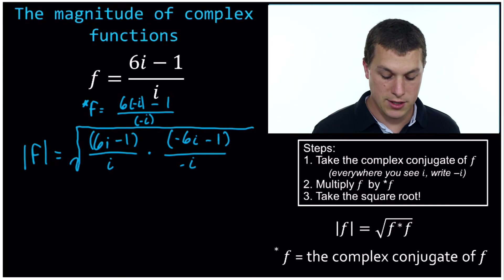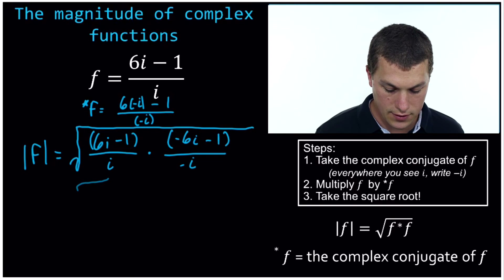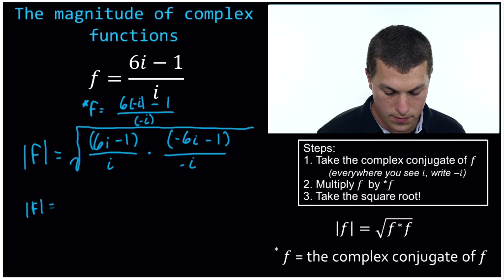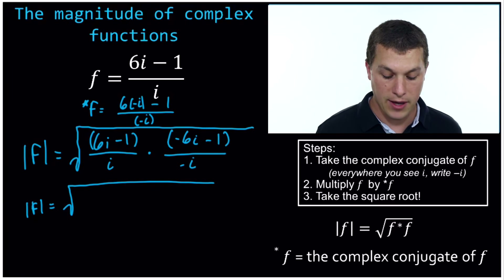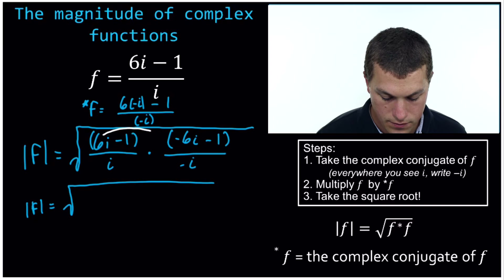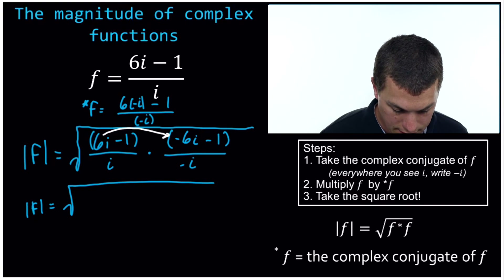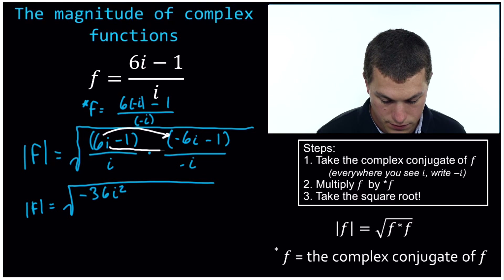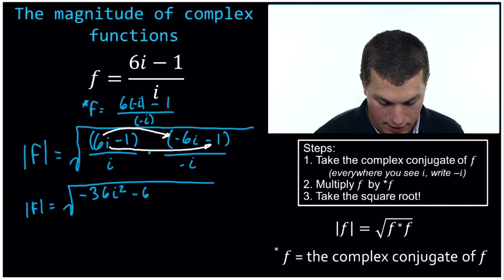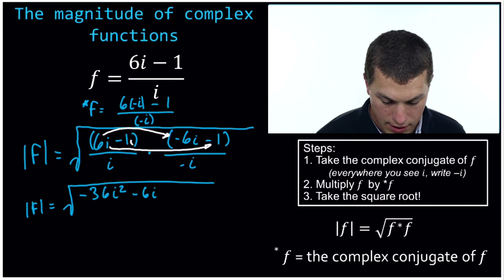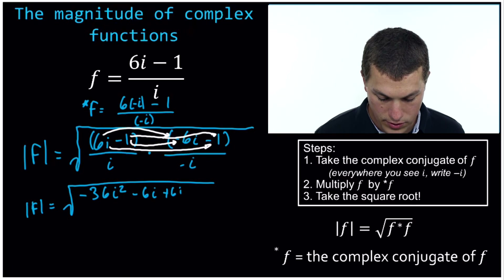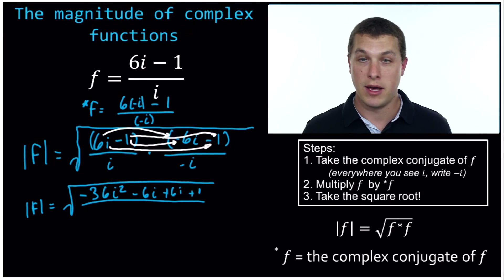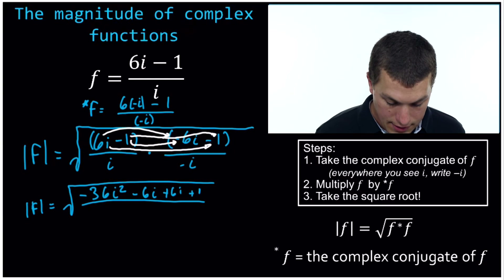The biggest trick here, once you get done taking the complex conjugate, is just remembering all your different multiplication rules for functions like this. We have to FOIL for the numerator. We multiply 6i by 6i — that's our first — and 6i times negative 6i gives us negative 36i squared. Then the outer ones: 6i times negative 1 gives us minus 6i. Then inner: minus 1 times negative 6i gives us plus 6i. And finally last: negative 1 times negative 1 gives us positive 1. On the bottom, when we multiply fractions, we multiply tops by tops and bottoms by bottoms, so i times negative i gives us negative i squared.